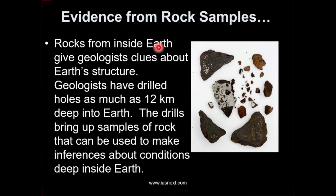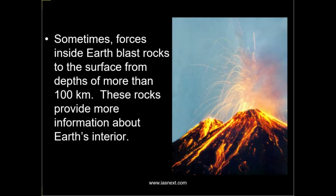What are the direct evidences? For example, rocks. Rocks from the inside of the earth give absolute clues about the earth structure. Geologists have drilled holes as much as 12 km deep in the earth. The drills bring up samples of rocks that can be used to make inferences about conditions deep inside. Other than this, volcanic eruptions also provide us information about the earth. All volcanic and earthquake activities occur in the lithosphere up to 100 km depth, so these volcanic rocks also provide us knowledge about the interior of the earth.